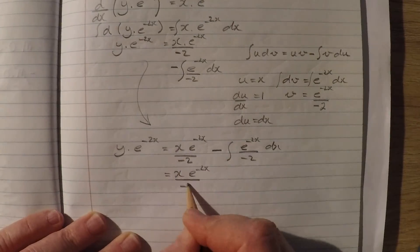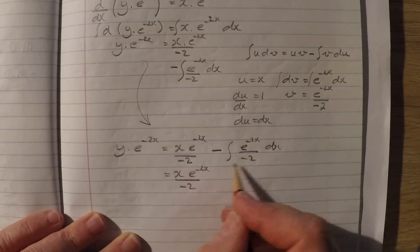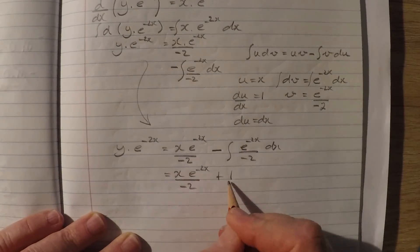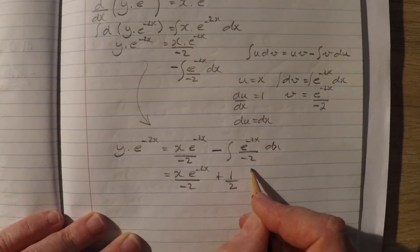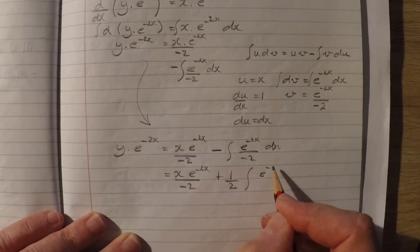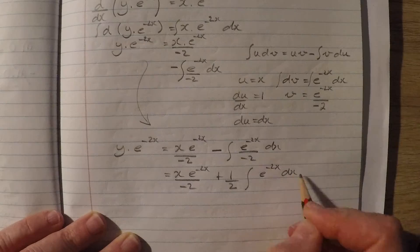I'll move the constant of negative 2 to the front here. So it will be plus 1 over 2 by the integral of e to the negative 2x dx.